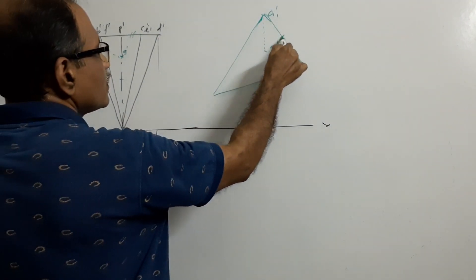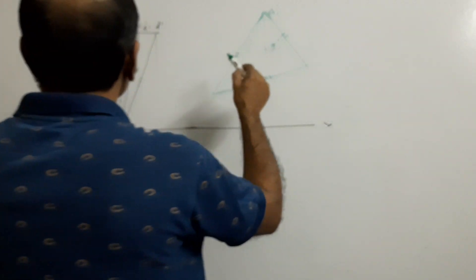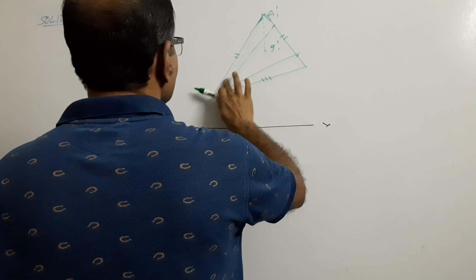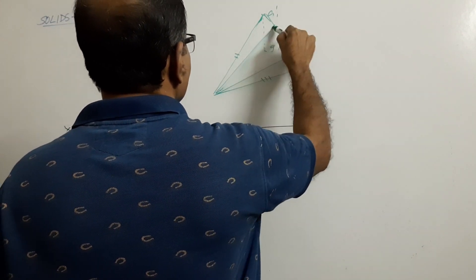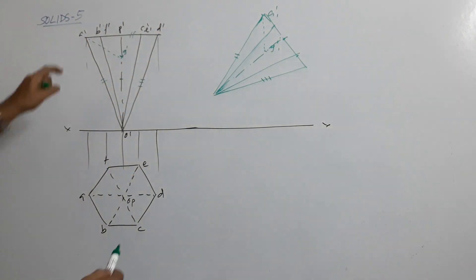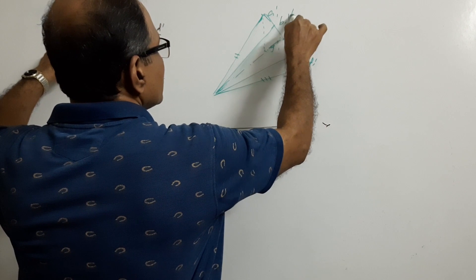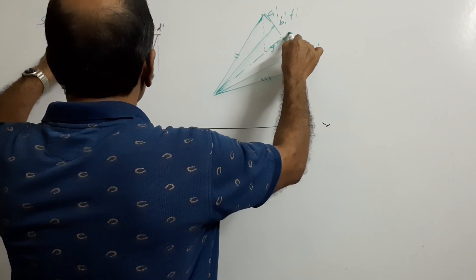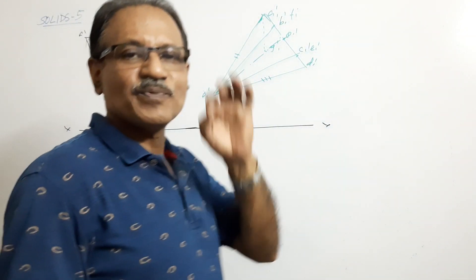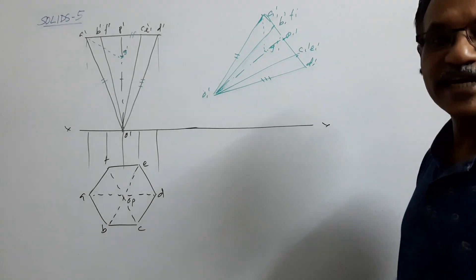This side is equal to this side, this side is equal to this side, and this side is equal to this side — mark the subsequent points. Since I am not following correct dimensions, there will be slight differences in the shape. Label A1 dash, B1 dash, C1 dash, D1 dash, E1 dash, F1 dash, O1 dash. The pyramid is now suspended about A so that AG is vertical.